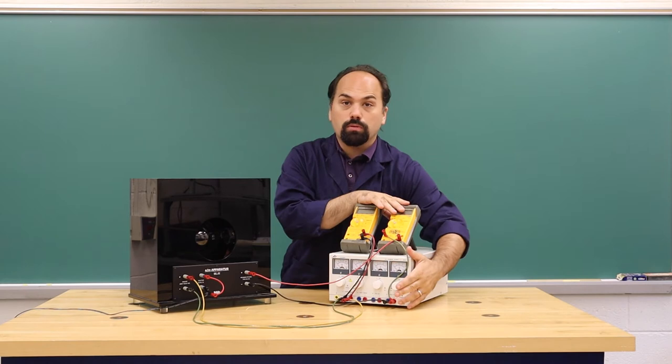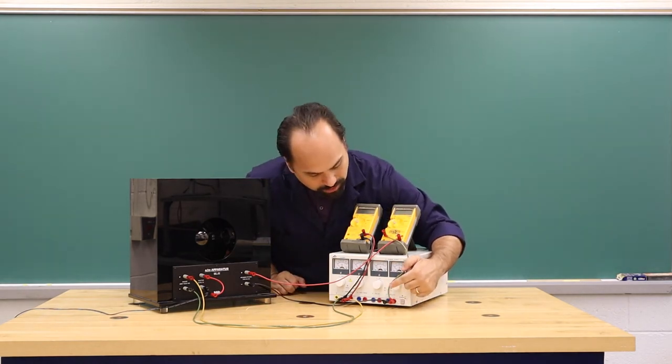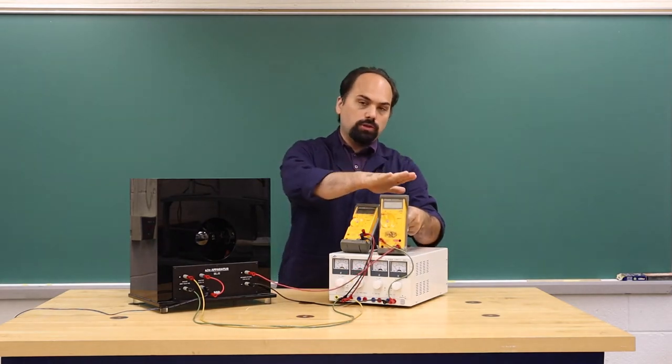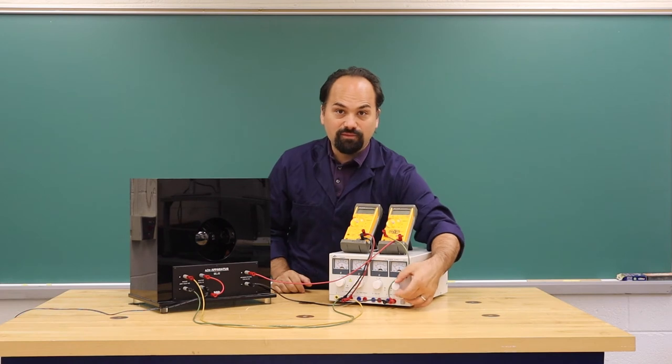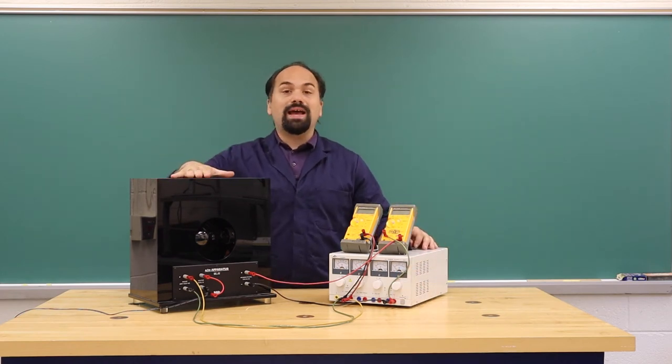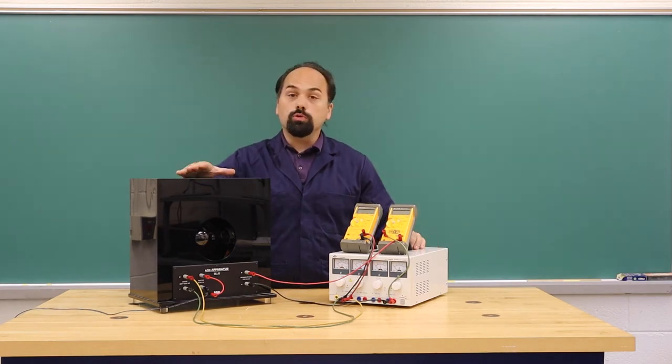As you then turn on your magnetic field, which you are controlling through this knob here, and watching the current using this multimeter, as you turn on that magnetic field, you will see the path of the beam change because it is now in the magnetic field.